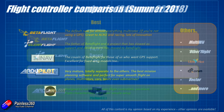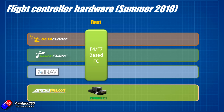Now let's talk about actual flight controllers. If I'm looking at Betaflight, CleanFlight, or iNav today, I'm looking at an F4 or F7-based flight controller. The F4 and F7 refers to the CPU — the higher the number, the more processing power and the more code it can run. The more modern boards are usually the F4 or F7-based ones, and towards the back end of the year I'll be starting to build with F7-based boards.